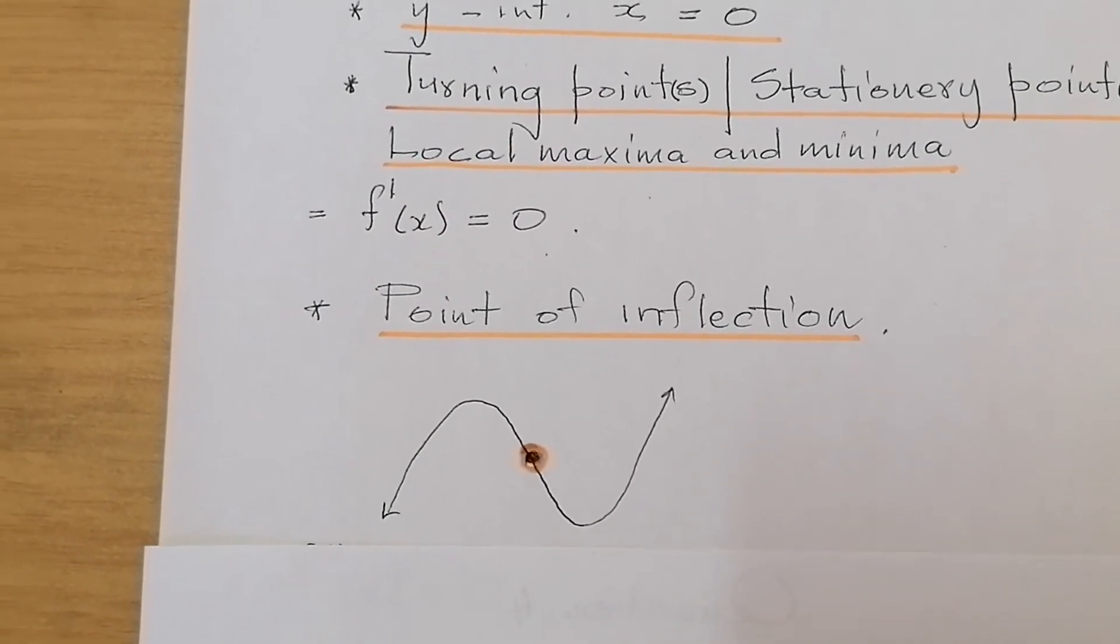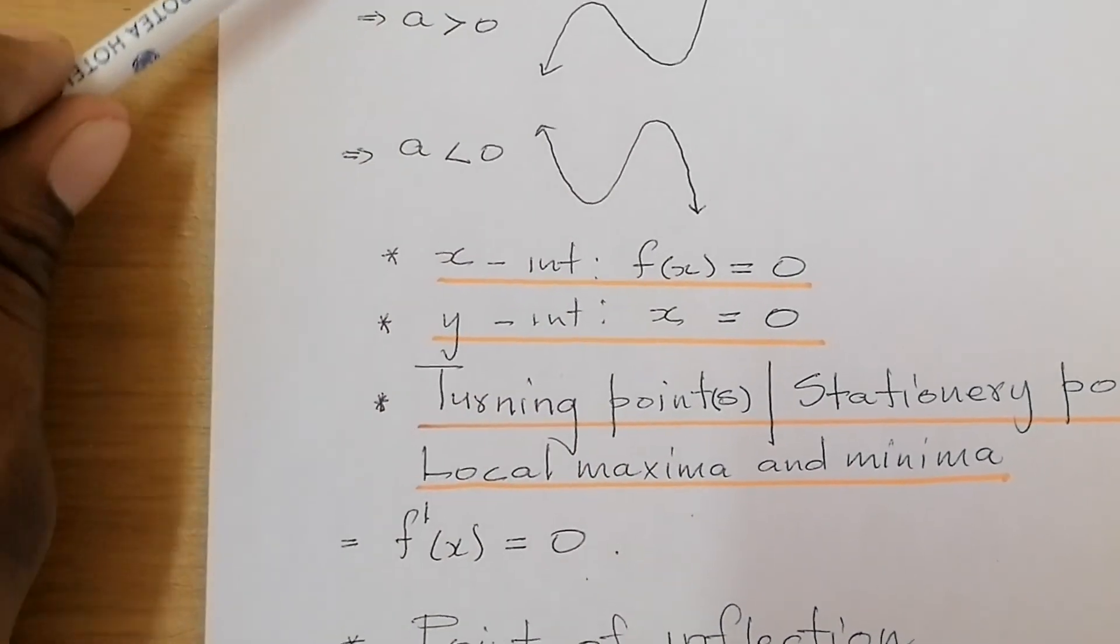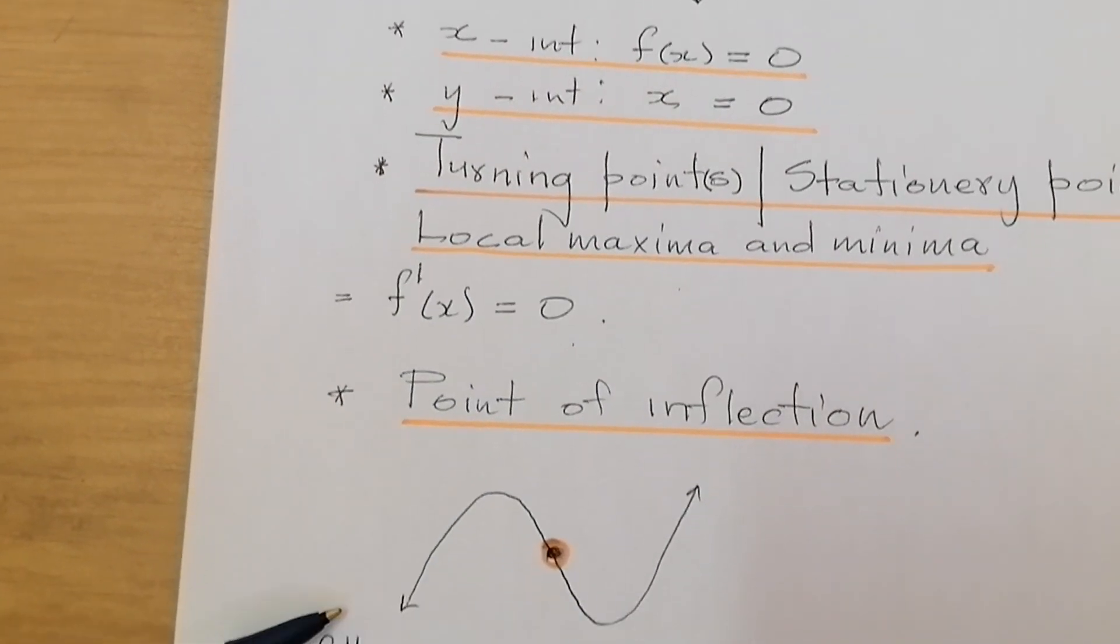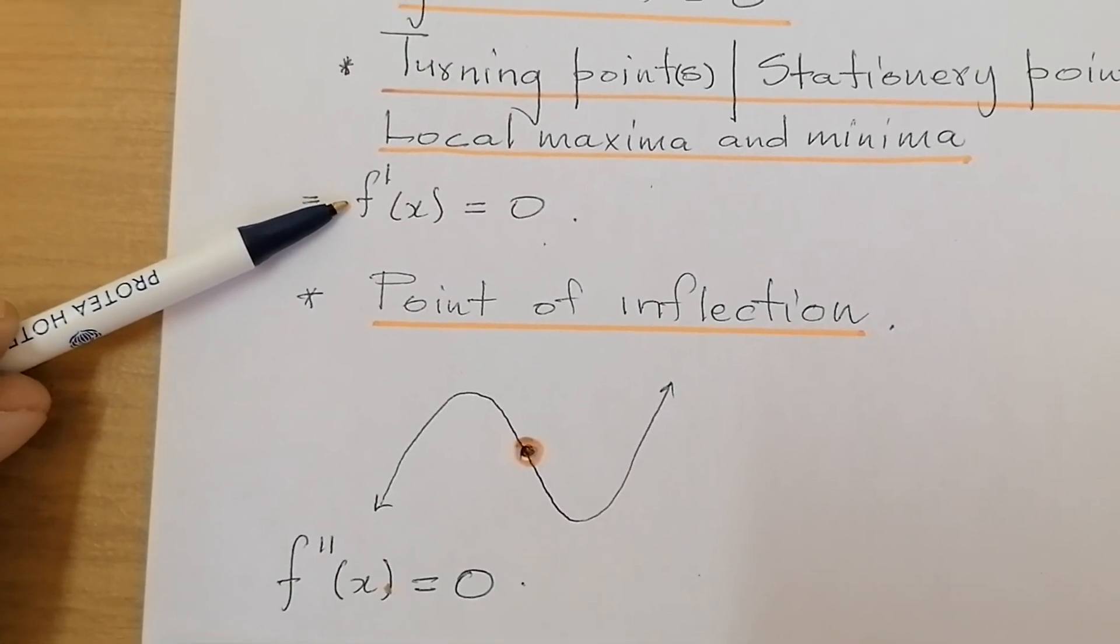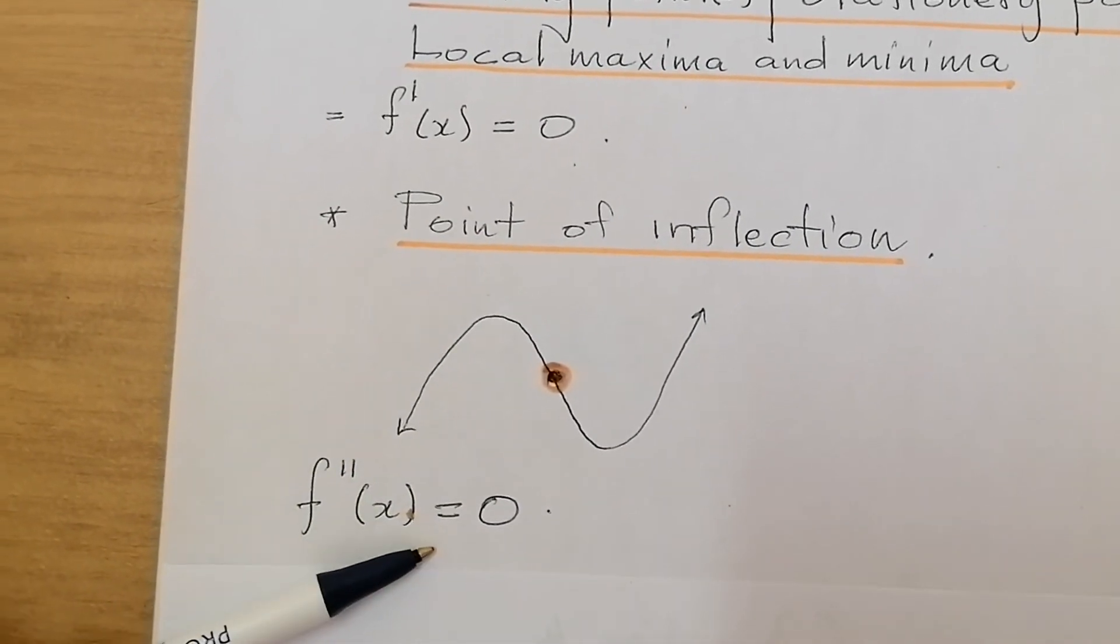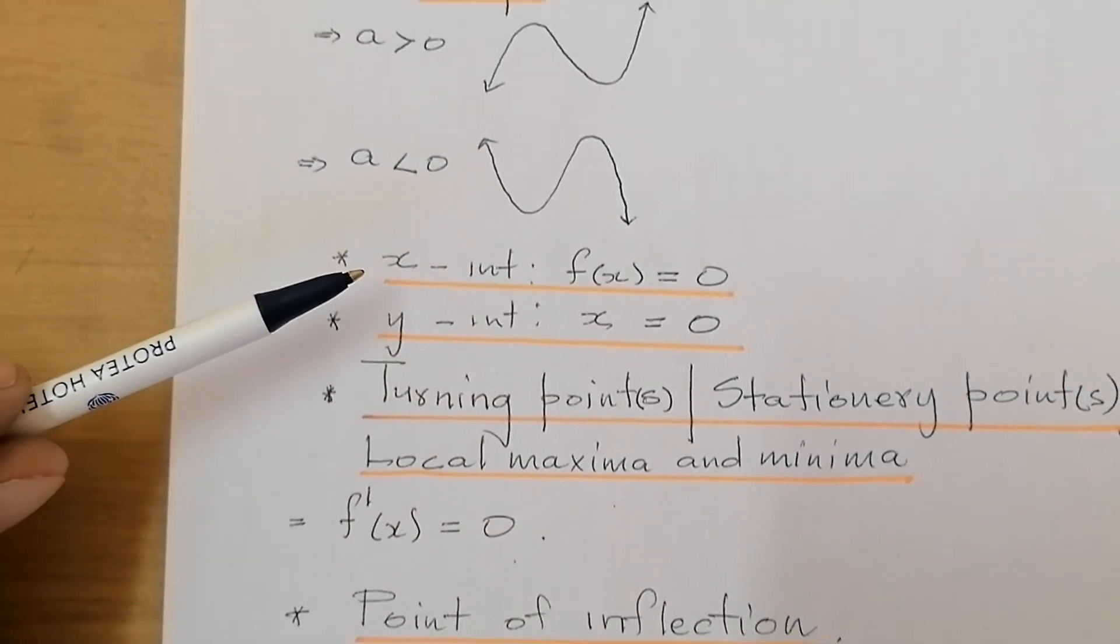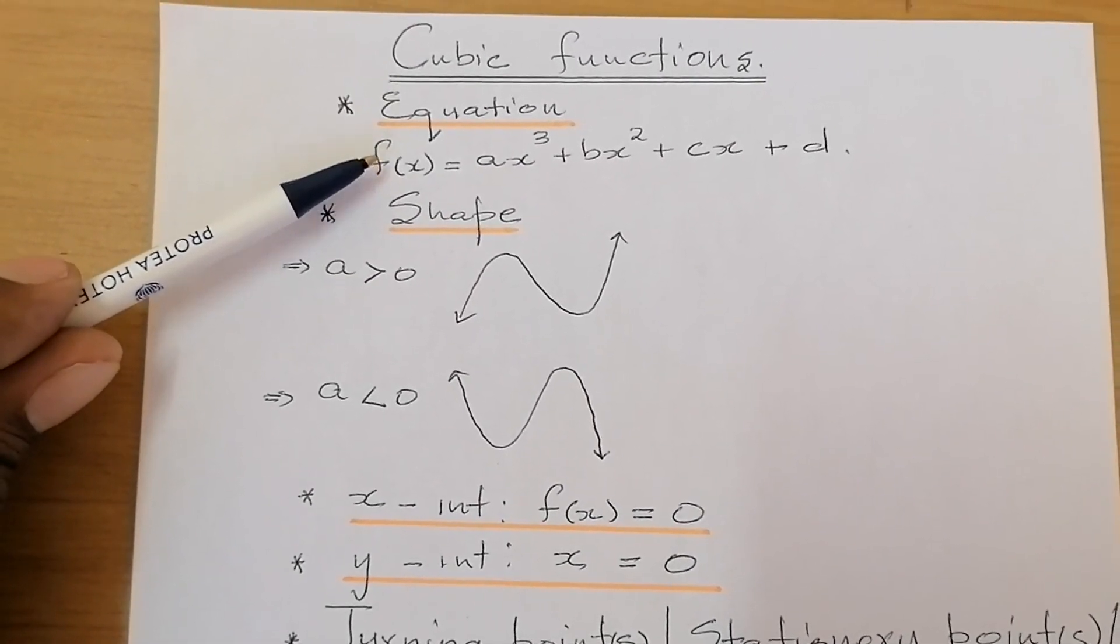Now, how do we determine the point of inflection? You need to determine the second derivative of the given function, which you have differentiated there. Now, it means that for the point of inflection, what I do, I just differentiate this again to get that and equate it to zero. From there, I solve for x. If they say determine the coordinates of the point of inflection, you take the x value that you get here, you go and substitute into your original given equation of a cubic function.